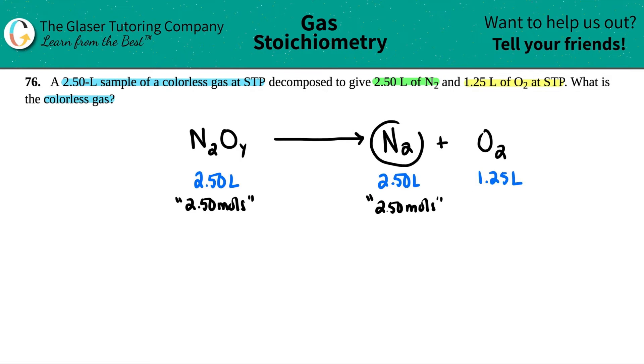If I have N2 and I have N2 here, if I want to balance it, there would be no coefficient, or basically the coefficient would be a one and a one. So let's see. If I keep this as a one, and this is 1.25 liters, and this is 2.5, basically what is going on here?